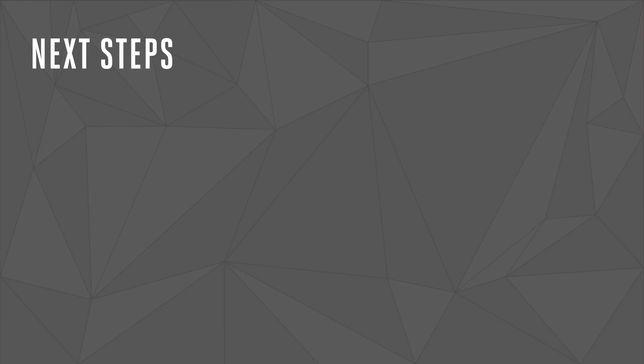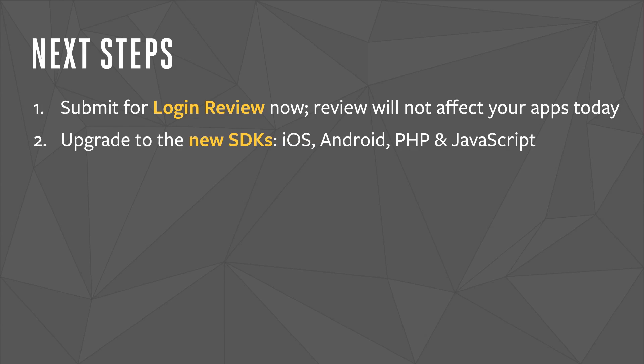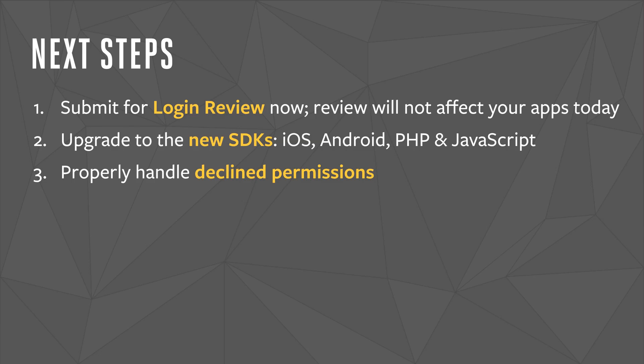So what are the next steps? First, we encourage you to submit for login review now. For apps which were active before April 30, 2014, the outcome of login review will not take effect until April 30, 2015. The earlier you submit for review, the more time you'll have to react to any changes our review team suggests. Second, upgrade to our latest iOS, Android, PHP, and JavaScript SDKs — these all call the latest API versions by default. Using them will also mean that people using your app will start to see the new Facebook login. Third, when you start using the new Facebook login, ensure your app provides a great experience even when people choose to decline permissions. Fourth, ensure that your database works with app-scoped user IDs. If your business operates multiple apps, you'll want to set up the Business Mapping API.